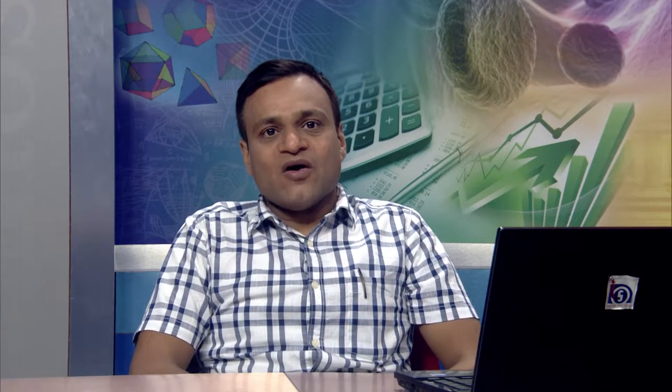These terms often refer to devices that help a person hear, understand what is being said more clearly, or to express thoughts more easily. We know two terms: one is receiving and the second is expressing. When we are listening, we are going through receiving. When we are saying something, expression is going on. So these Assistive Devices always help a person to receive or understand something, or to help when expressing if we have a problem in speech.